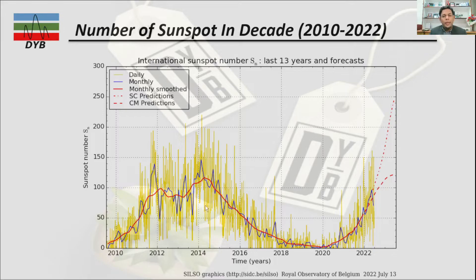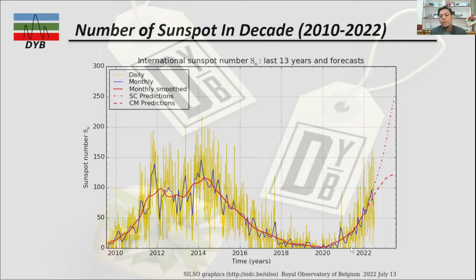During that time some effects were observed on the surface of the earth, which I will discuss later. Right now we are in July 2022, and you can see that sunspot activities are gradually increasing. The maximum sunspot activity is predicted to be around 2025.